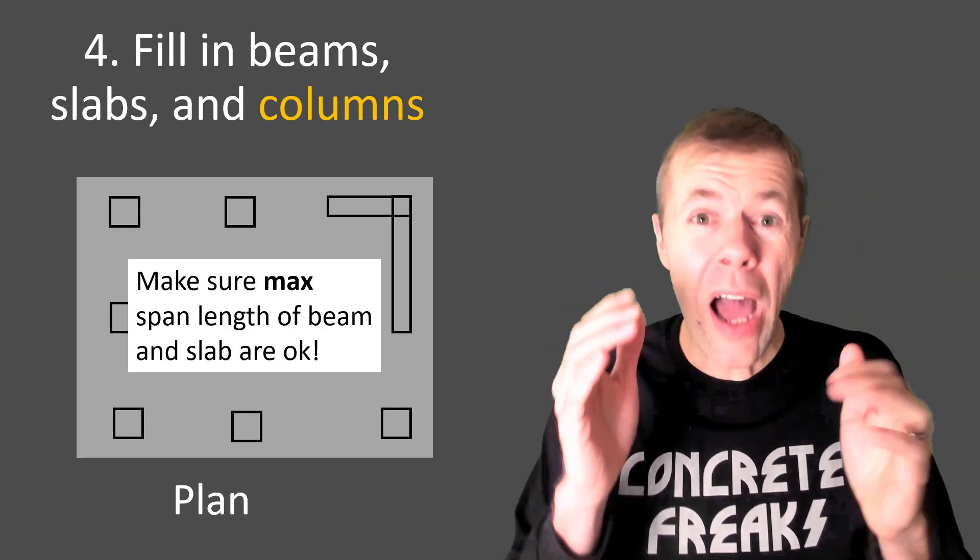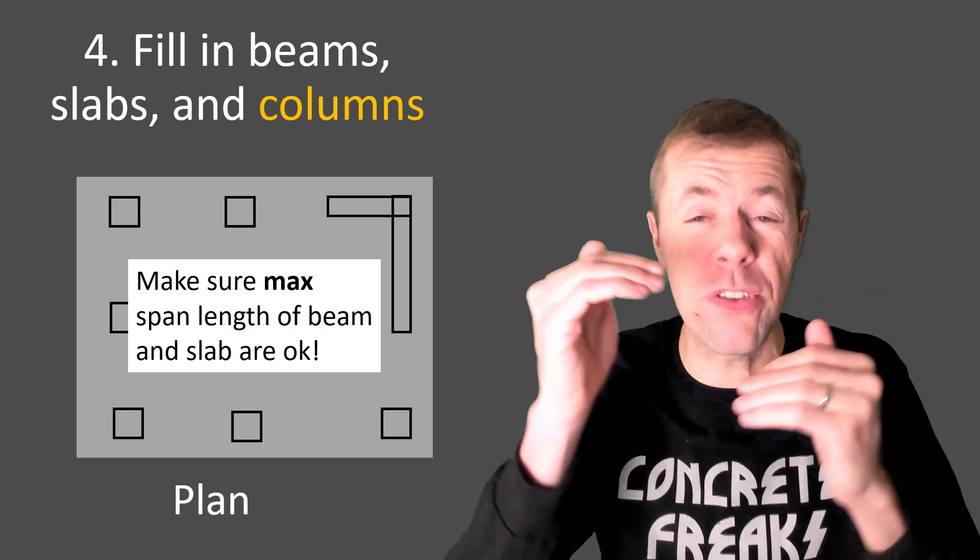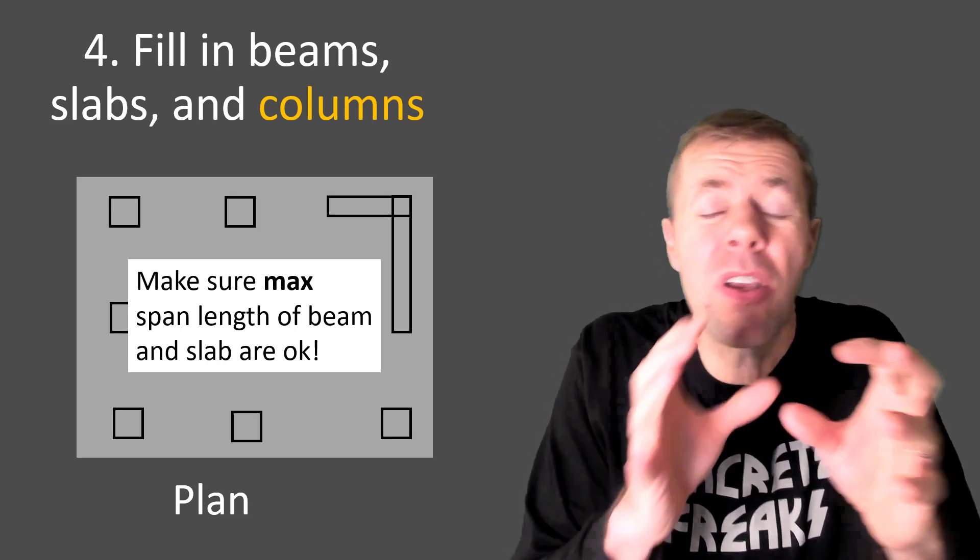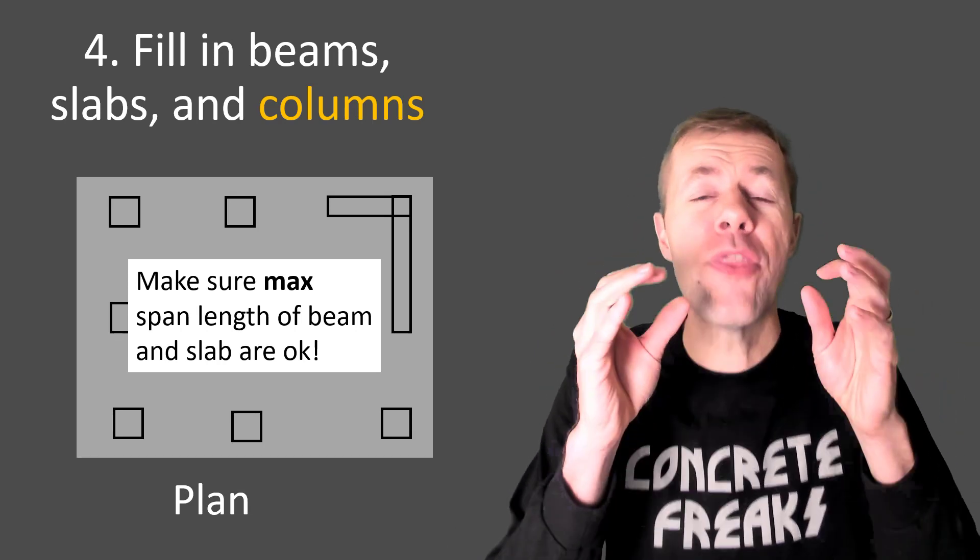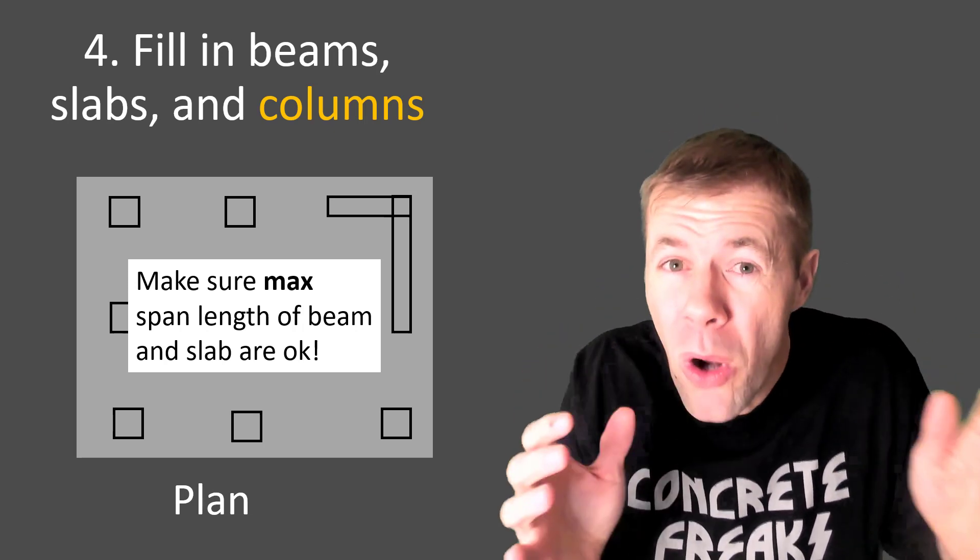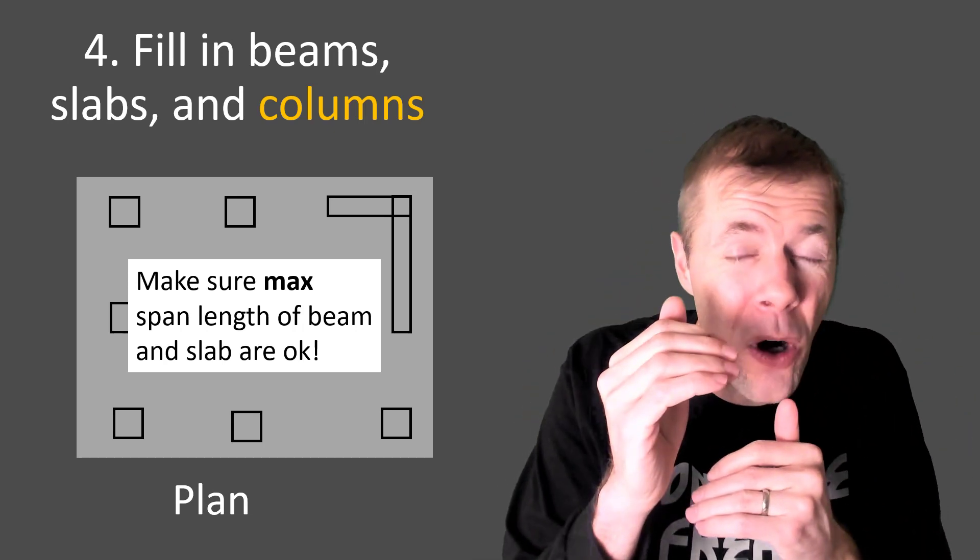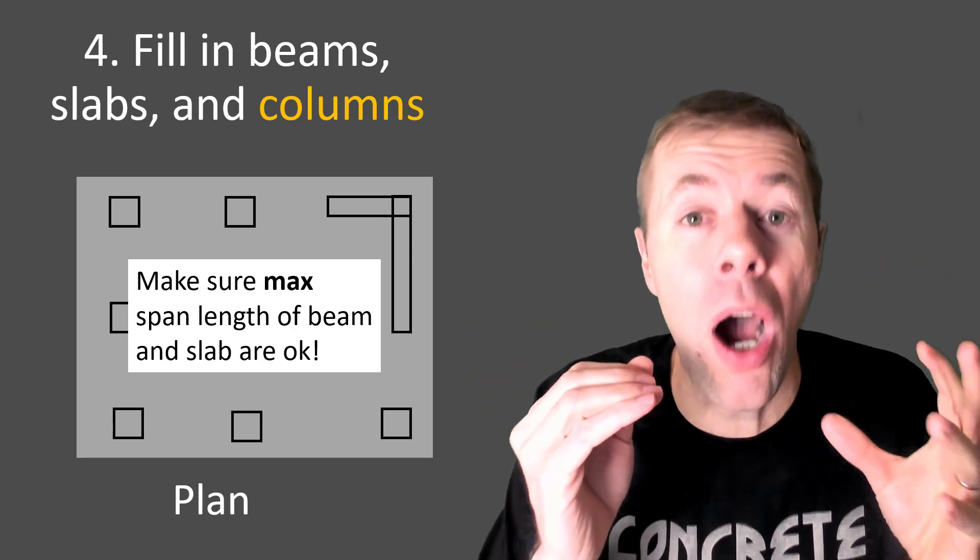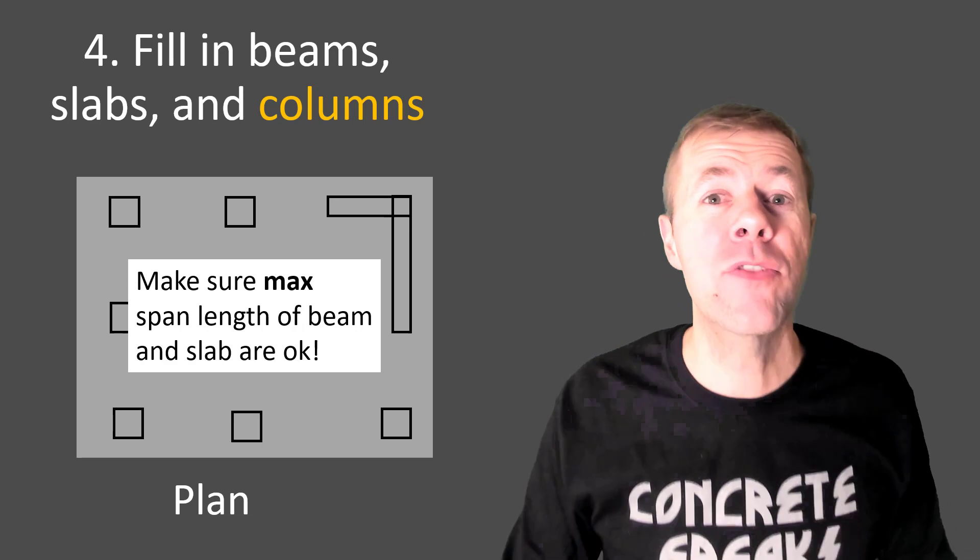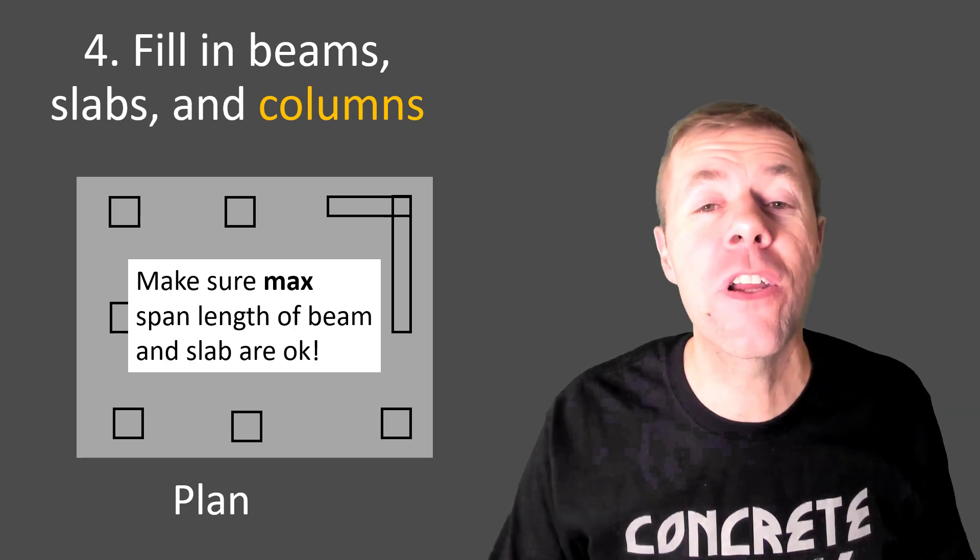You have to make sure that your maximum span length of the beams and slabs are okay. You know those span links we talked about before for the slabs and the beams? You have to kind of like walk them through. Make sure you put columns in the right spot so the beams aren't too long or the slabs aren't too long. And you might say what do I do if they are? Add an extra column.